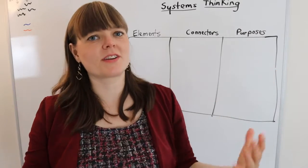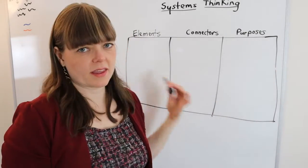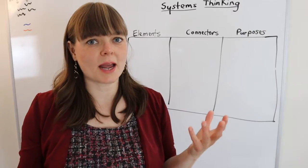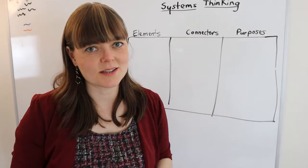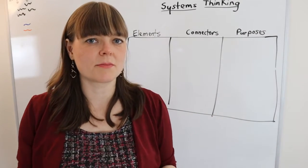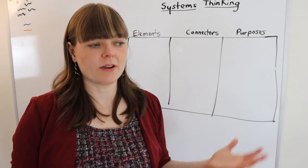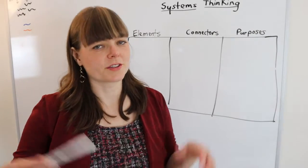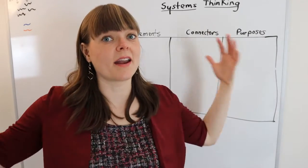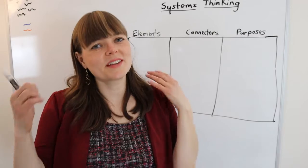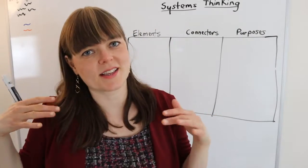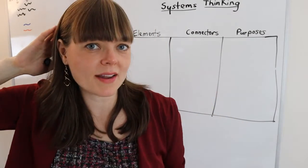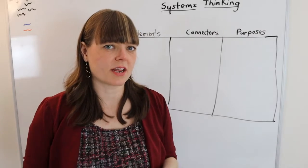We might want to have some different examples in our head as we think this through. As an economist, I'm thinking about the healthcare system and the legal system. But systems can include physical things like the digestive system, the school system, the economic system. Obviously, the economic versions bubble up to the top of my mind, but there's lots of different types of systems.